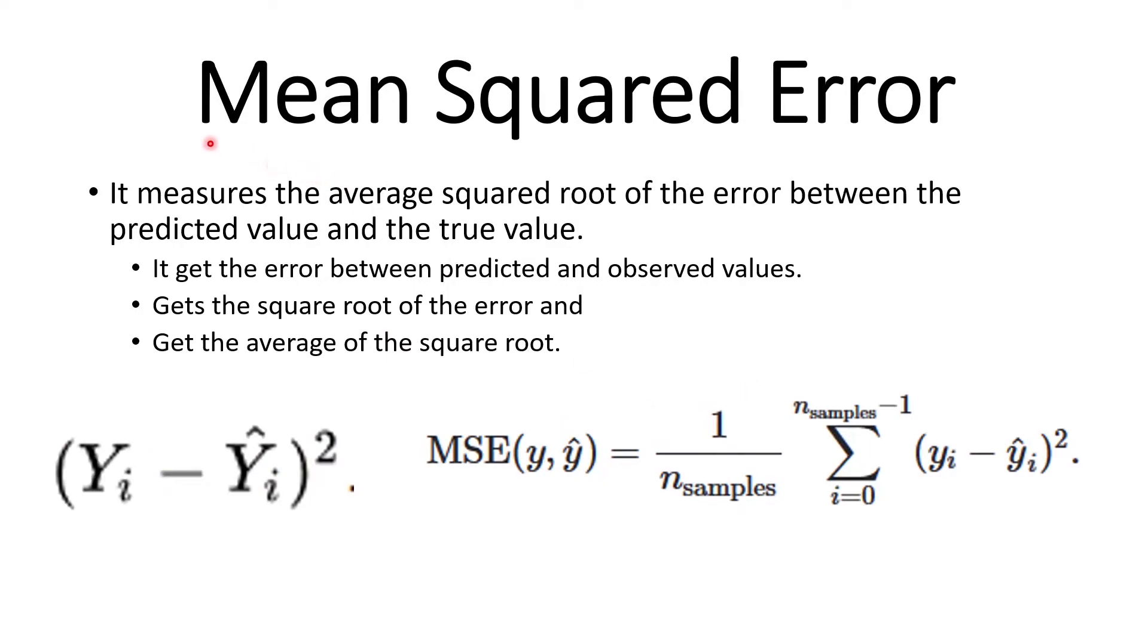Then we have mean squared error. Mean squared error measures the average square root of the error between the predicted value and the true value. First it gets the error between the predicted and observed value, gets the square root of the error, and then gets the average of the square root. That's how mean squared error is calculated.